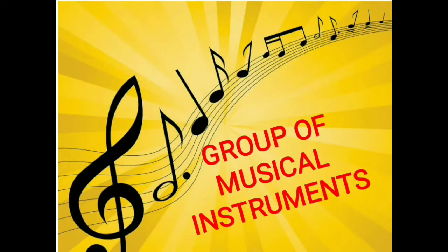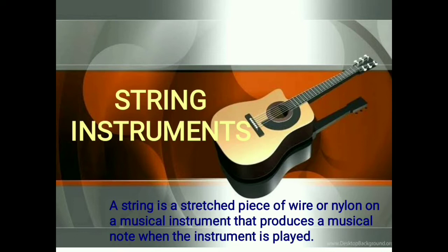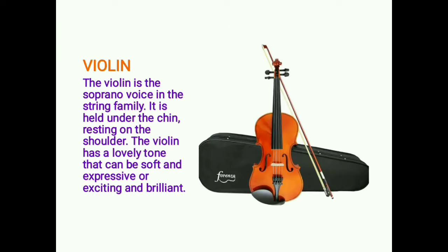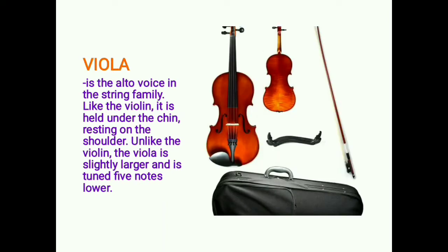Let's have a peek at the group of musical instruments. First, we have string instruments. A string is a stretched piece of wire or nylon on a musical instrument that produces a musical note when the instrument is played. The violin is the soprano voice in the string family; it is held under the chin resting on the shoulder and has a lovely tone that can be soft and expressive or exciting and brilliant.